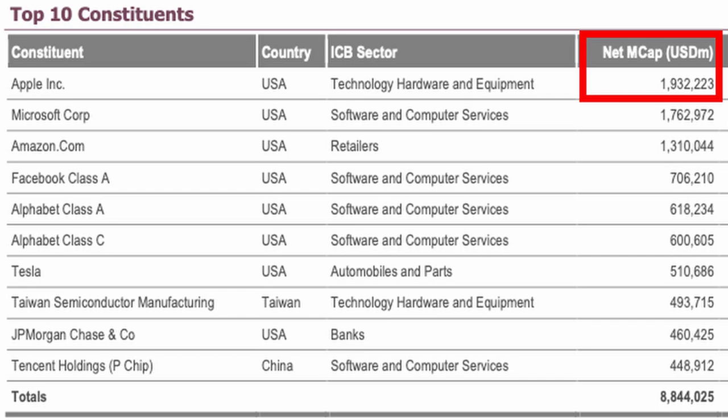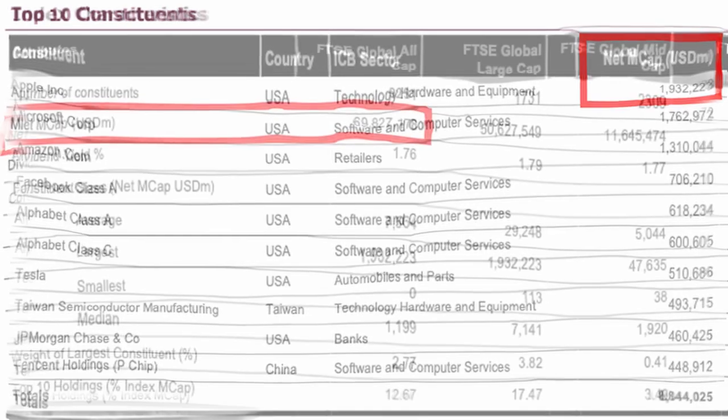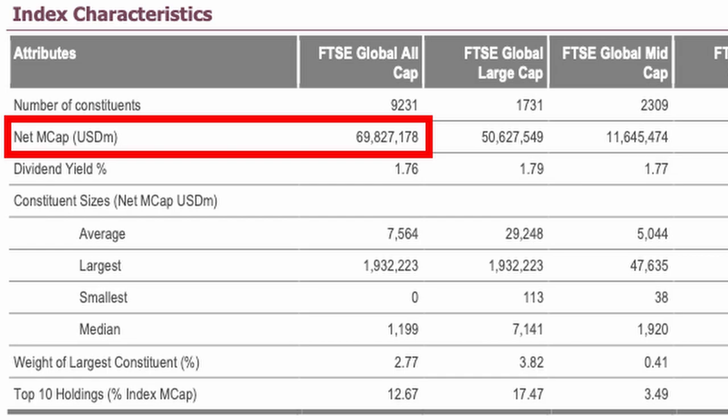So, what does market cap-weighted mean? Market cap is the total value of something on the market. For instance, Apple has the highest market cap of publicly traded companies at $1.93 trillion as of March 31, 2021. The market cap of all stocks tracked by the FTSE Global All-Cap Index was $69.83 trillion on March 31, 2021. Since this is a market cap-weighted index, Apple is the largest holding at 2.77%. This is Apple's market cap of $1.93 trillion, divided by the total market cap of all stocks in the index, which is $69.83 trillion. As companies change in value, their weight in the index changes accordingly. I'll put a link to the FTSE Global All-Cap Index fact sheet below.